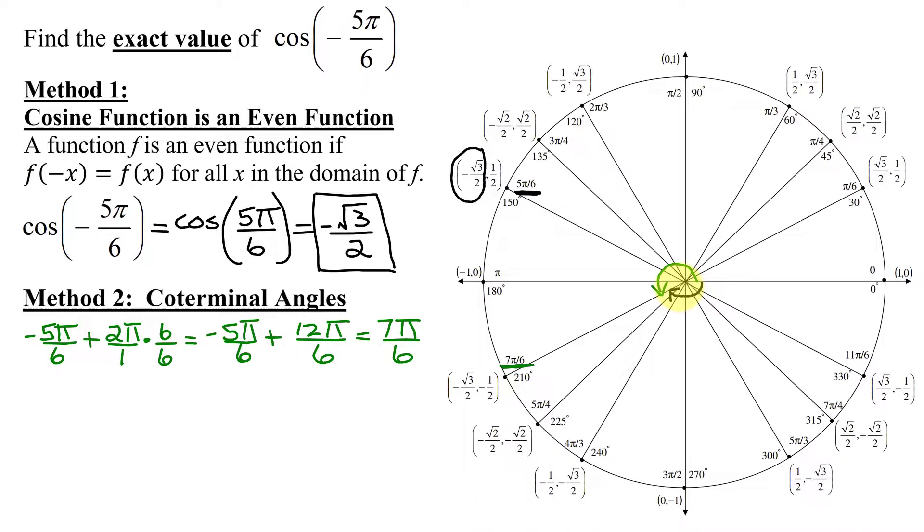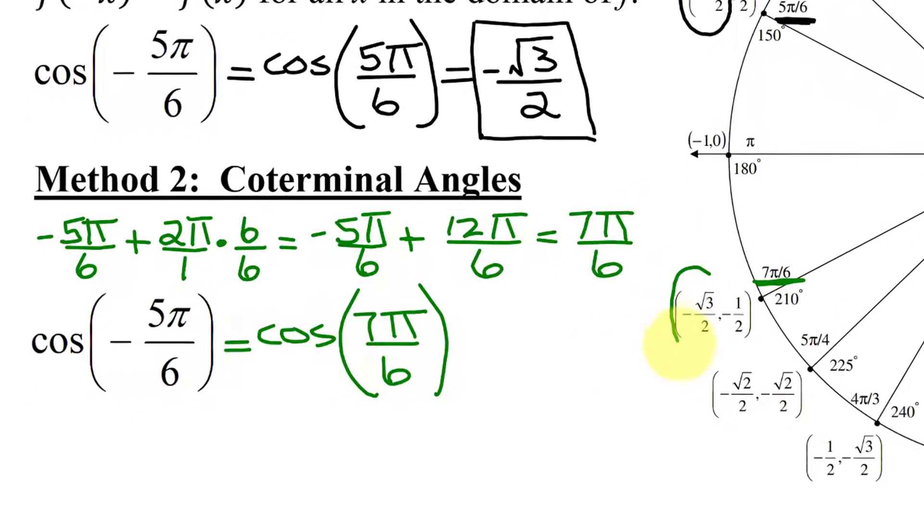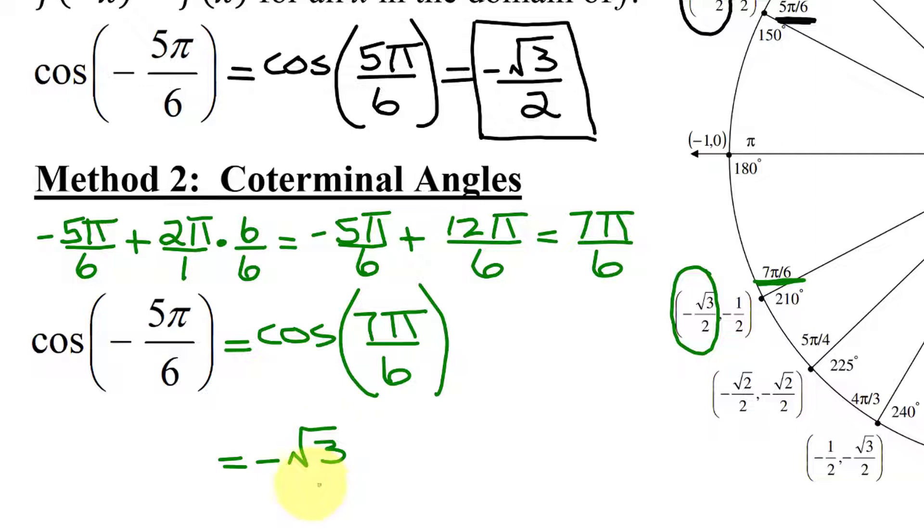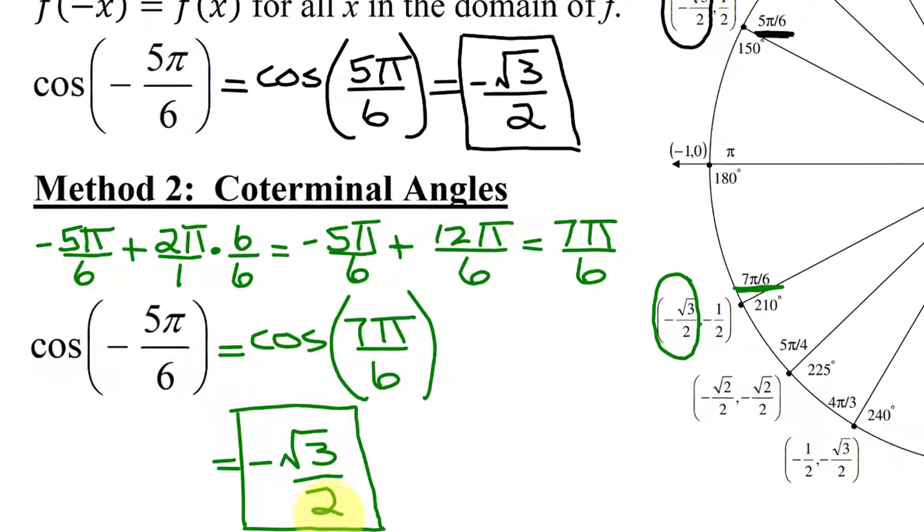So now I know that the cosine of negative 5π over 6 equals the cosine of its coterminal angle of 7π over 6. So the cosine of negative 5π over 6 is negative √3/2.